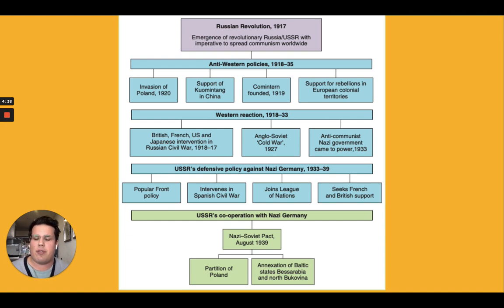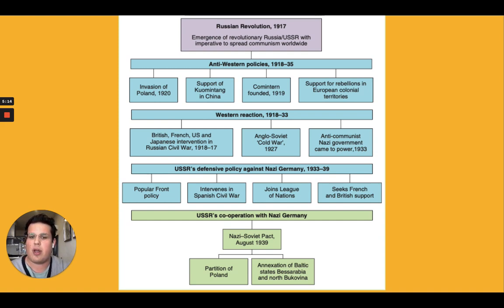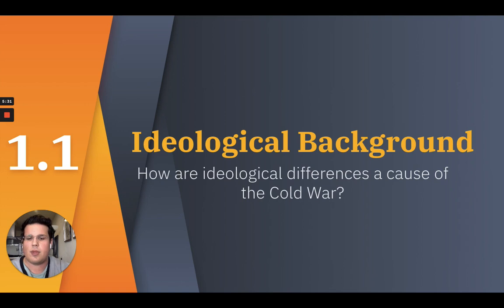For the origins of the Cold War, when we talk about origins, we need to talk about the ideology of the Cold War — how these ideologies promote different ways of viewing the world and understanding the global state of affairs. We're going to start with the Russian Revolution of 1917, move to anti-Western policies from 1918 to 1935, see the Western reaction from 1918 to 1933, and look at the USSR's defensive policy against Nazi Germany, ending with the Nazi-Soviet Pact. Our guiding question is: how are ideological differences a cause of the Cold War?